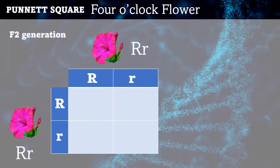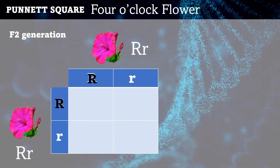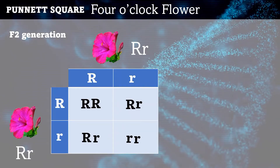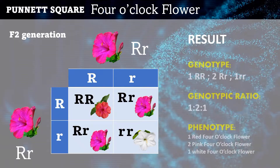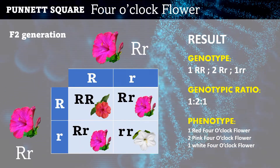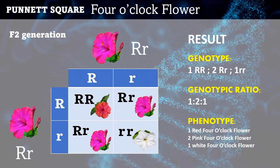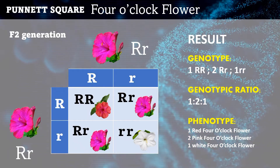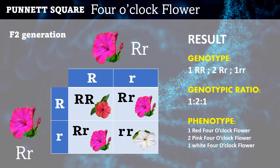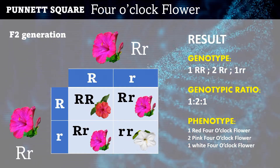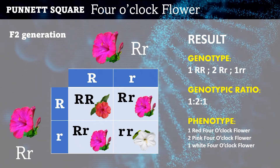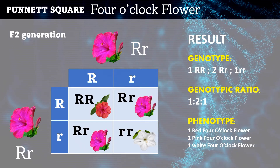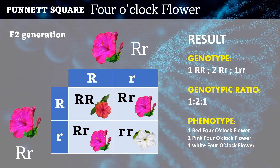For the F2 generation, the heterozygotes — the pink color flowers — are crossed to see the respective phenotypes. The phenotype in the F2 generation results in the same ratio as proposed by Gregor Mendel, which is 1:2:1. The offspring phenotypes were 25% red flowers, 25% white flowers, and 50% pink flowers. This shows that incomplete dominance does not necessarily involve absolute blending, because the heterozygote contains both distinct alleles — the red and the white color — which after crossing in the F1 generation, the red and white color traits still appear. In incomplete dominance, the offspring contains both alleles, but their expression is intermediate between the two parent traits.